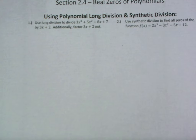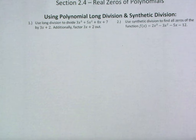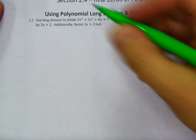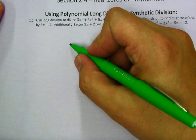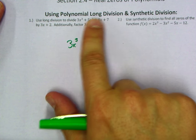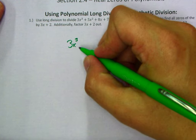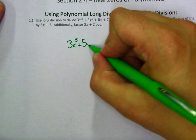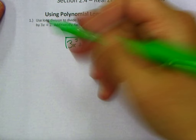Number one says to use long division to divide 3x cubed plus 5x squared plus 8x plus 7 by the binomial 3x plus 2, and additionally we're going to factor that out. We're going to bring down our terms. What's nice about these is you'll notice we don't skip over any degree — this is degree 3, 2, 1, 0 — and therefore I don't have to worry about any sort of placeholders. So: 3x cubed plus 5x squared plus 8x plus 7, divided by 3x plus 2.